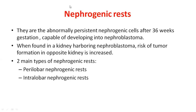Nephrogenic rests arise from nephrogenic cells or nephrogenic blastema that normally develop into the kidney, but when these persist after 36 weeks they have the capability to develop into nephroblastoma. Depending on where they are located, they are divided into perilobar and intralobar nephrogenic rests. When nephrogenic rests are present on one side of the kidney, there is a significant chance that nephroblastoma can develop in the opposite kidney as well.